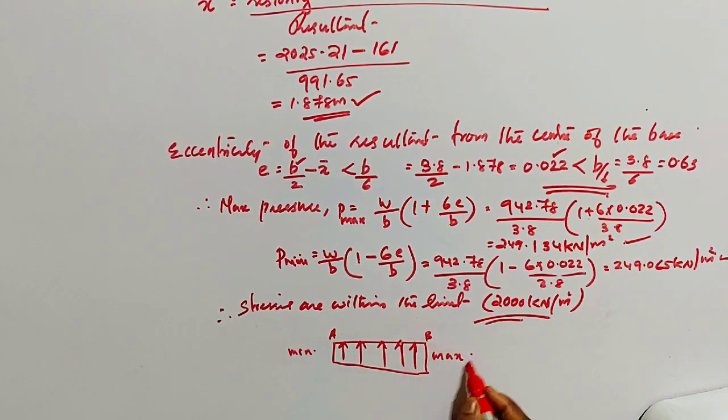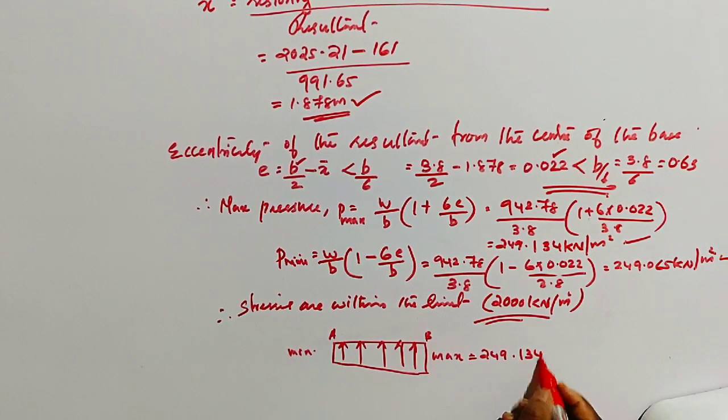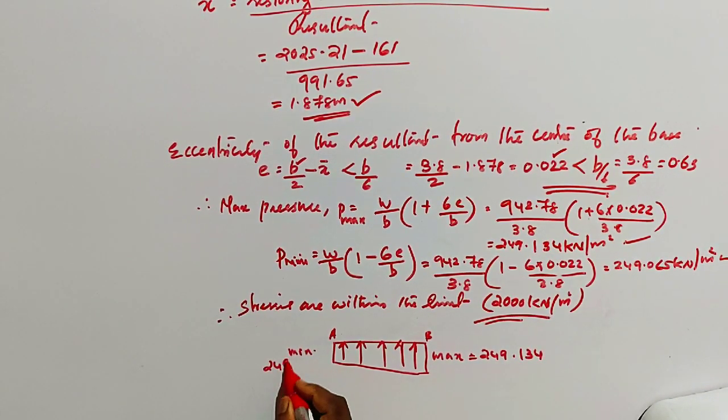A B, it is 249 maximum, 249.134, and minimum it is 249.06. This is the pressure distribution diagram at base.